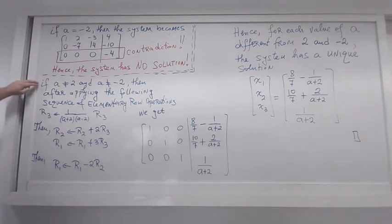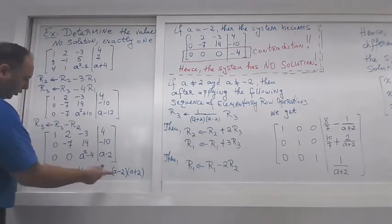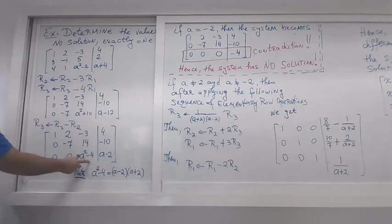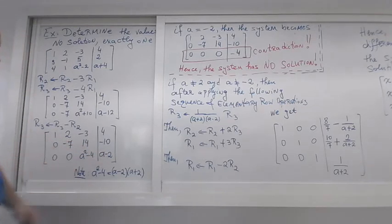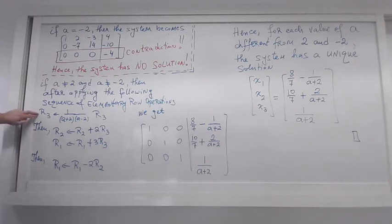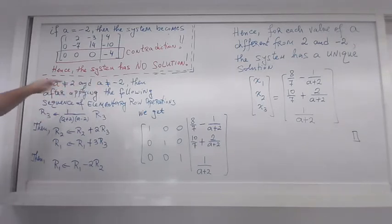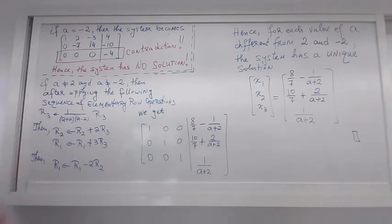The last case: what happens when a is not equal to 2 and not equal to -2? We start from our row-reduced system. Since a is neither -2 nor 2, we can safely divide by the product (a - 2)(a + 2), giving a 1 in that position with 1/(a - 2) on the right. We then continue elementary row operations to reach reduced row echelon form, and since a is not 2 and not -2 we know none of these divisors are zero.